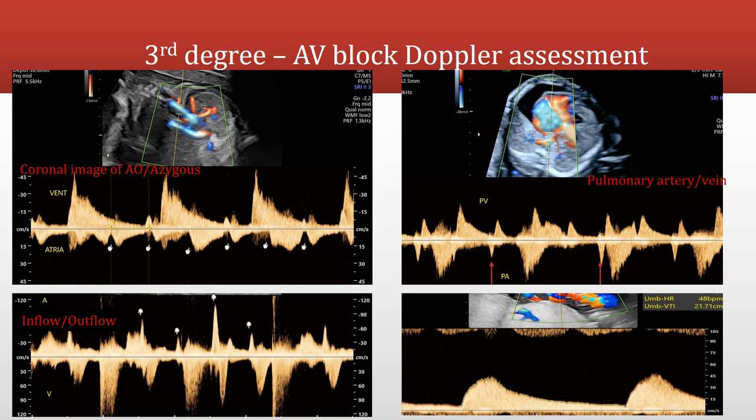Looking at Doppler assessment of third degree AV block: on the aorta and azygous vein parallel artery and vein image, the atrial contractions are indicated, and the ventricular contractions are also clearly visible. The same can be seen on the inflow-outflow image. On the pulmonary artery and vein image, two AV intervals are measured and found to be significantly different from each other, confirming complete dissociation between atria and ventricles.